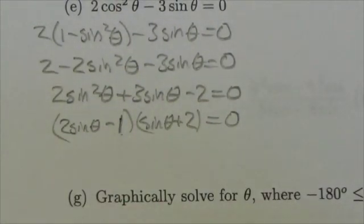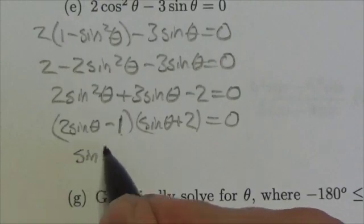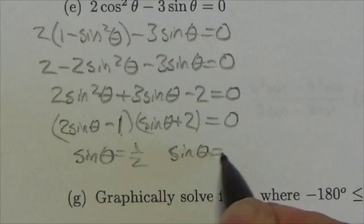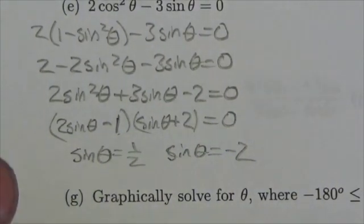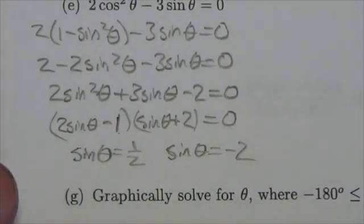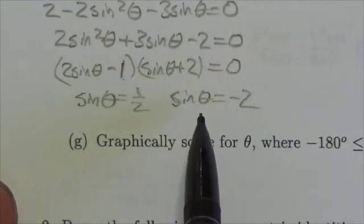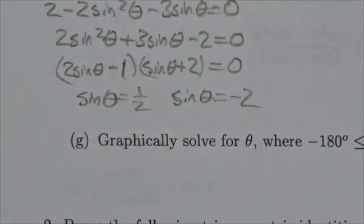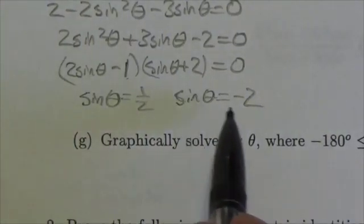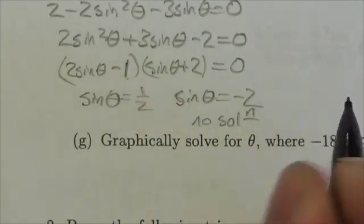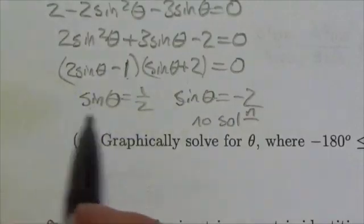I've got two separate sine functions here. In this case, sine of theta could be equal to 1 half, or the sine of theta here could equal negative 2. Now I hope that immediately this sets off warning bells. Sine, think back in your experience with trig, sine has a maximum value of 1, a minimum value of negative 1. It's not possible for sine to be negative 2. So there's going to be no solution coming from this particular factor here. They're all going to be coming from here.